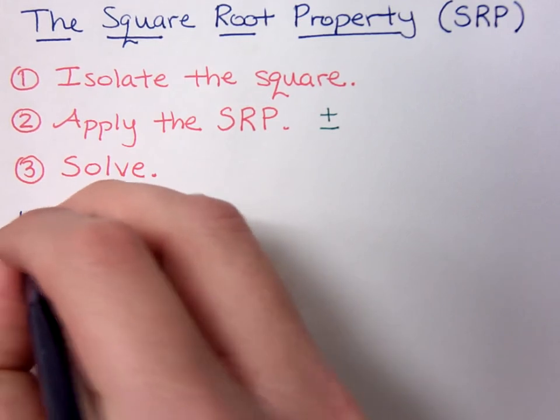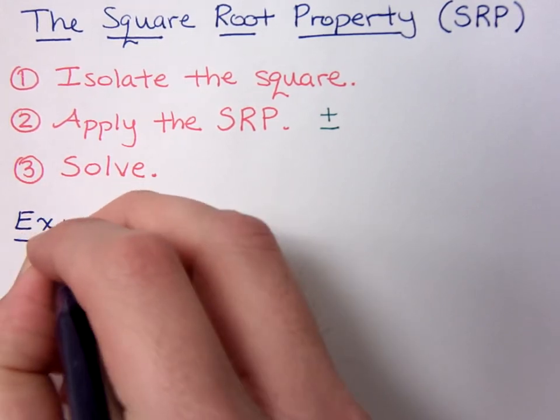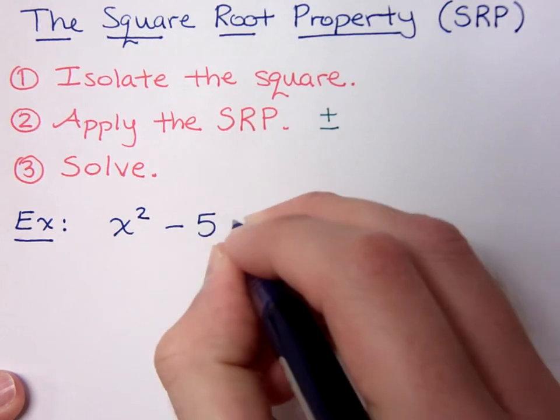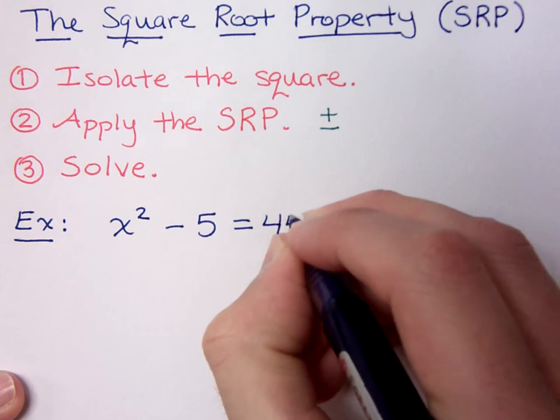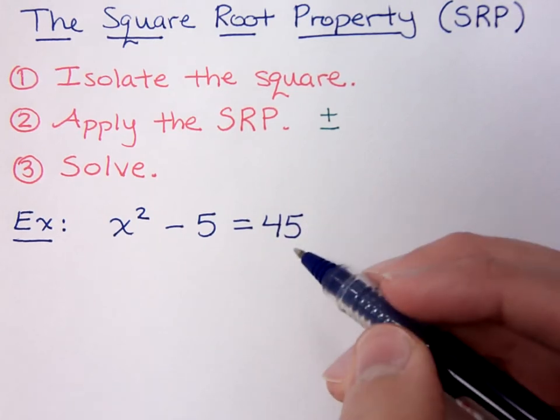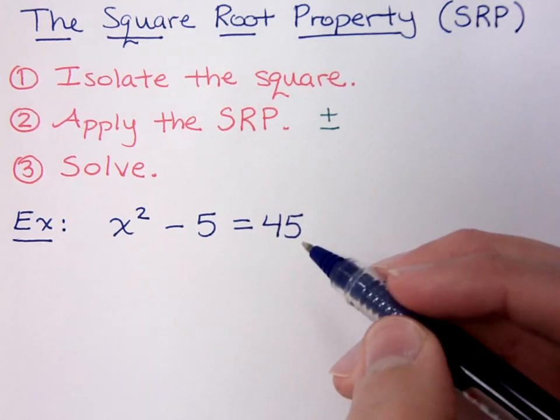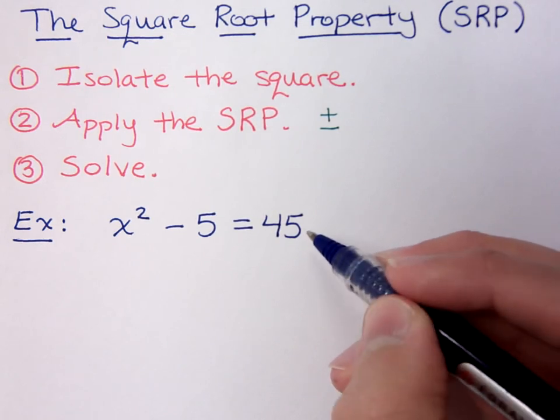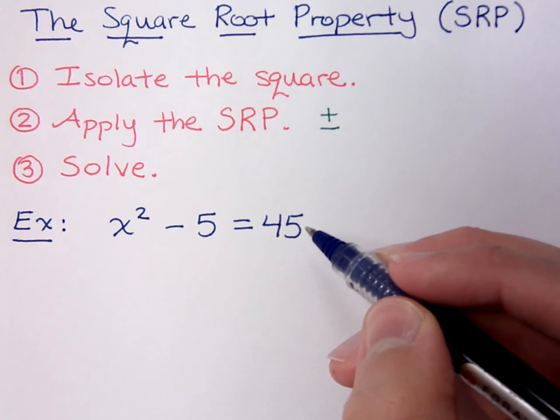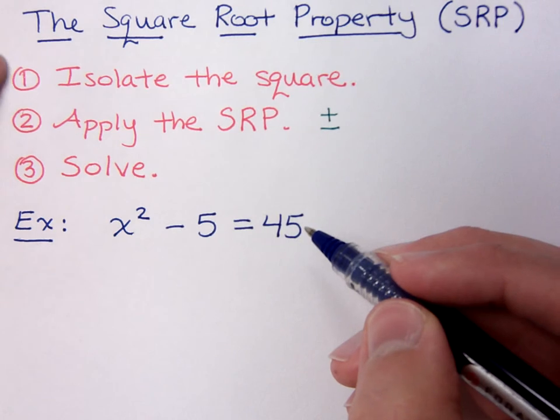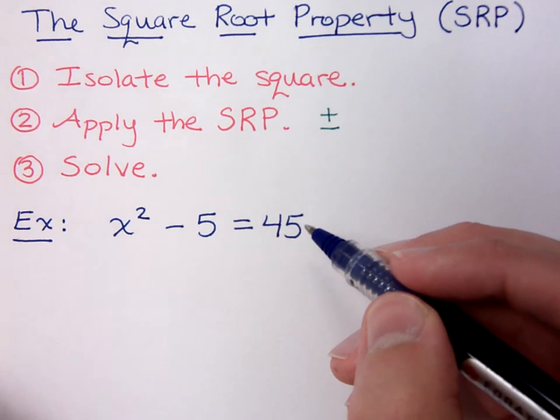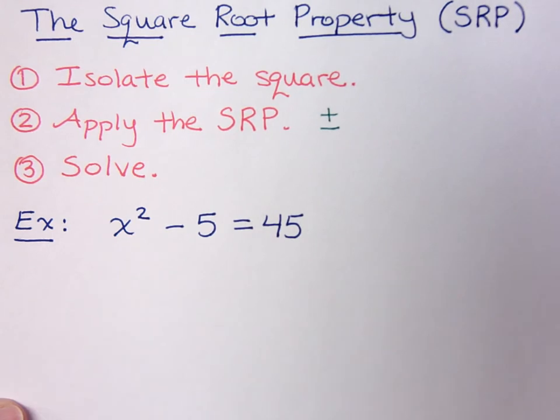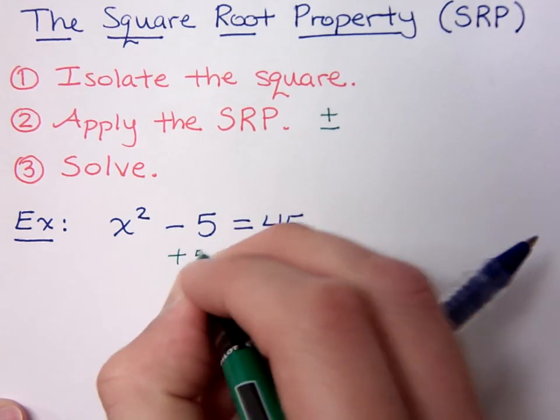Let's take this guy for example. I have x squared minus 5 equals 45. Now at first glance, you may look at this and see, okay, I've got a square, it's quadratic, let's get everything to one side. You can go ahead and try to do that, but it's not going to help you because this guy does not factor using nice integer values. Instead, follow the steps. Isolate the square. Your square is this guy right here, it's the x squared. So to isolate this guy, we're going to add 5 to both sides of the equation.